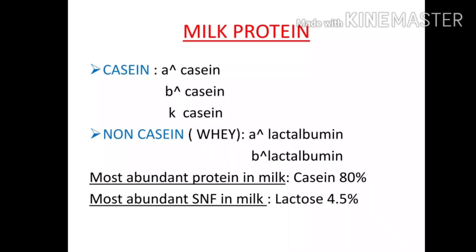There are 2 types of milk protein: casein and non-casein. Casein has 3 types: alpha-casein, beta-casein, and K-casein. K-casein means kappa-casein.